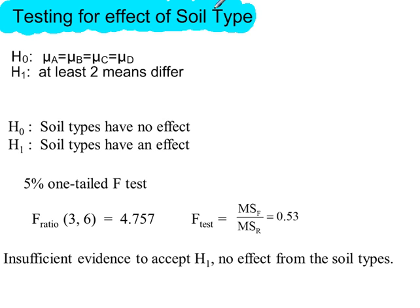And our third factor, soil type. H0 in terms of A, B, C, and D—they were the labels given to each of the four soil types. Or we can use wording instead for H0 and H1. Our critical value, same as before. Our test value 0.53. This is less than the critical value, so we're going to accept H0. Conclusion in context: insufficient evidence to accept H1, no effect from the soil types.